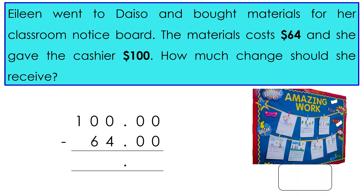Here, we realize that the $1 value of the $100 is 0, and is not enough to subtract the $4. Therefore, we need to borrow from the $100 by putting a slash. Now, we write 9 as the remaining dollar value and 1 $10 is carried forward to the dollar position.